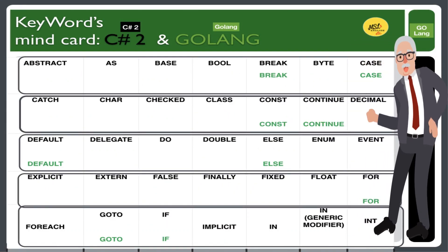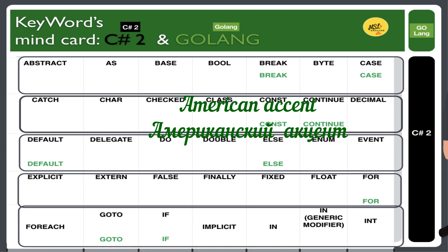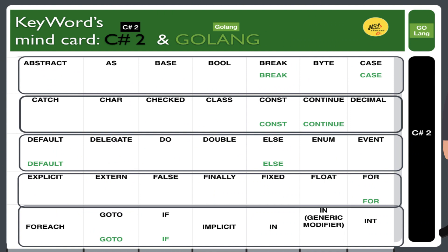Hi guys. Let's get started to compare and repeat two computer languages — C# and Go language. You will hear American and British accents. Let's get started. Abstract. As. Base. Bool. Break. Byte. Case. Catch. Char. Checked. Class. Constant. Continue. Decimal. Default. Delegate. Do. Double. Else. Enum. Event. Explicit. Extern. False. Finally. Fixed. Float. For. ForEach. Goto. If. Implicit. In. In — generic modifier. Int.